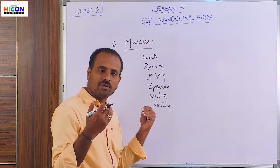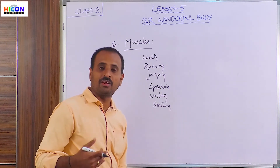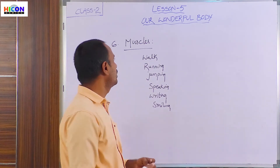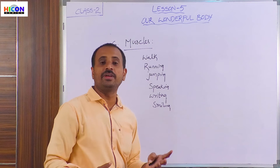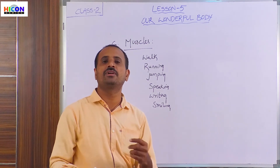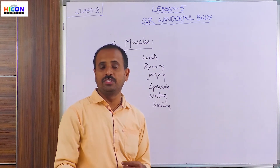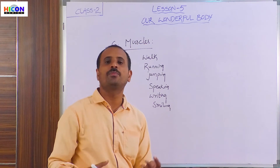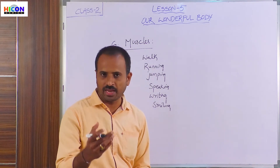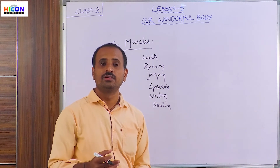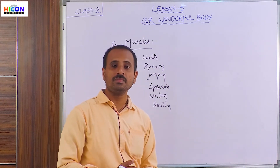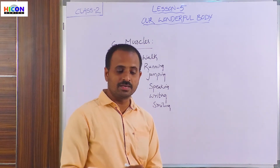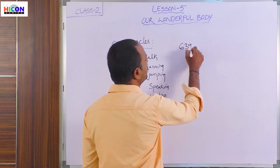Without muscles, we cannot walk, run, jump, speak, write, or smile — no activity can be done in our daily life. These muscles are very helpful to us to perform various activities. From the time we wake up in the early morning until we go to bed at night, we do various types of activities, and all these activities are carried out with the help of muscles. There are nearly 639 muscles in our body.